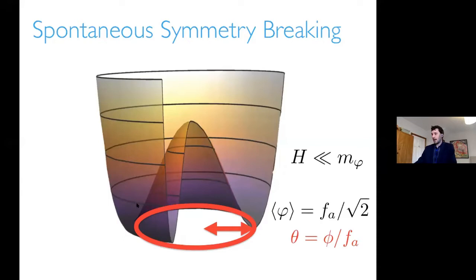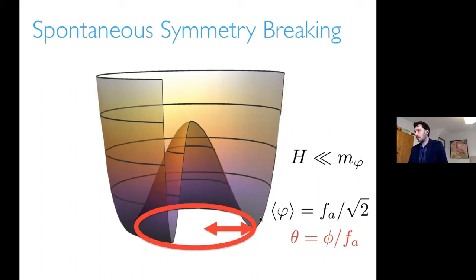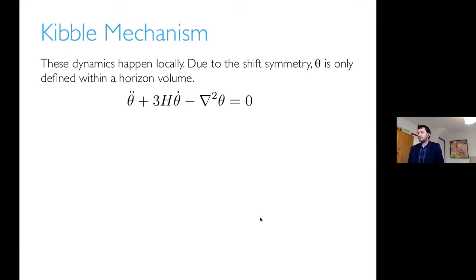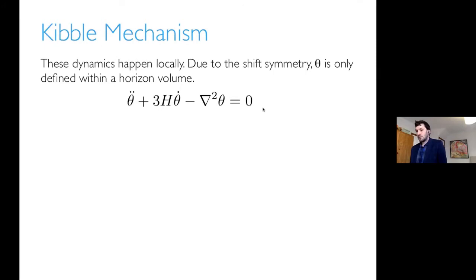The axion field takes on a whole series of random values in different causally connected regions along the vacuum manifold given by the circle. In terms of the axion field dynamics, we now have something called the Kibble mechanism to think about. These dynamics of the falling off the potential happen locally. Because of the shift symmetry, theta is only defined within a horizon volume.